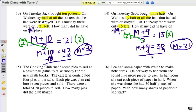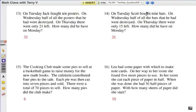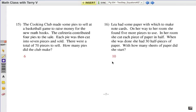Let's look at 15 and 16. I'm going to show the answers, and let's work backwards here to figure out how those answers were gotten. The cooking club made some pies. So first of all, we start with the pies the cooking club made to sell to a basketball game, raise money for new math books. The cafeteria contributed four pies to the sale. Each pie was then cut into seven pieces and sold. There were a total of 70 pieces to sell. How many pies did the club make?